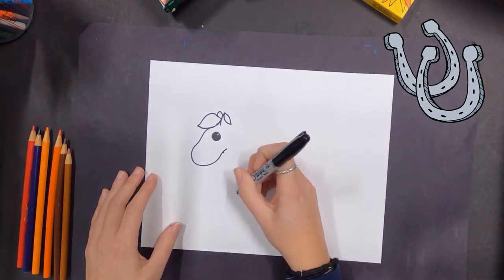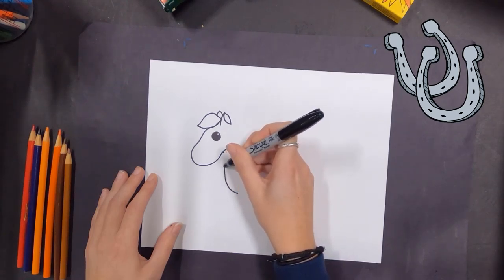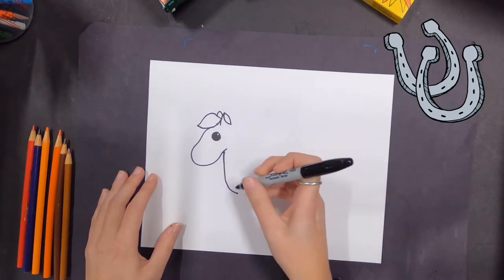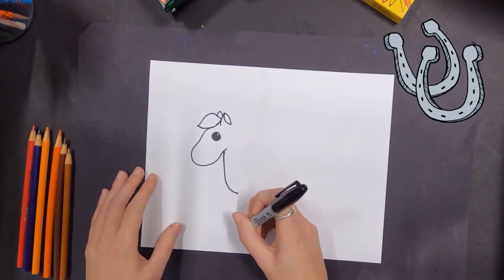Now we're going to pull up and make his ear. There you go. So we're just pulling up and then whipping around, and then there's that other ear. Now pull that line up and you've got it. We're starting to see our horse.